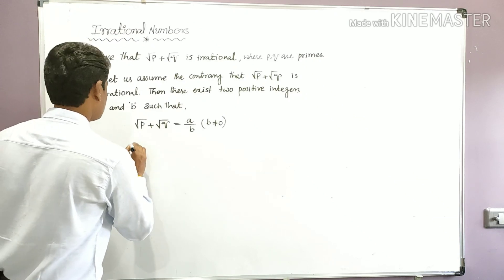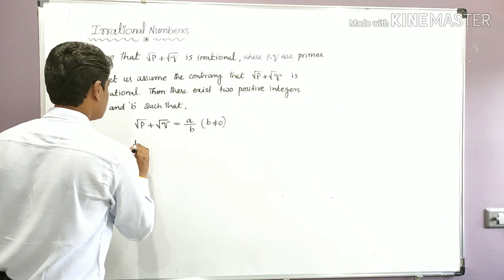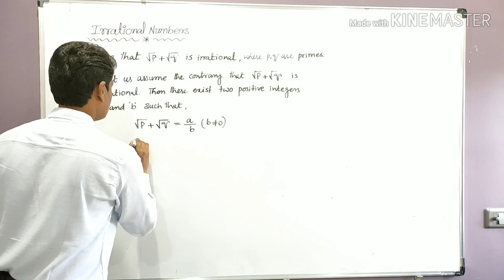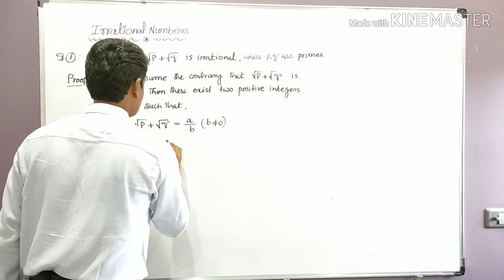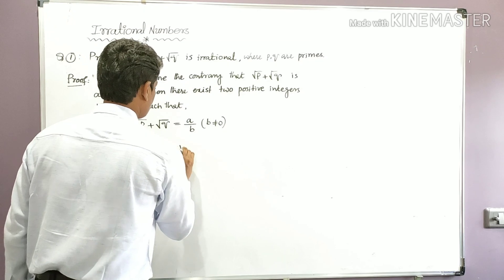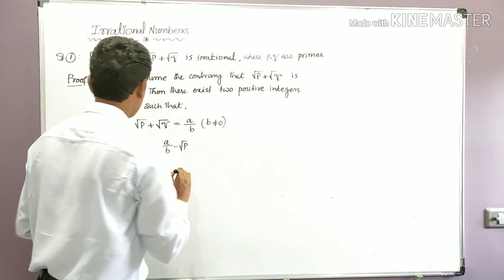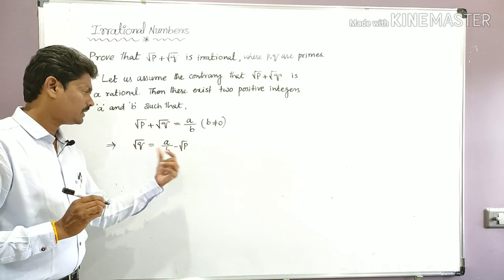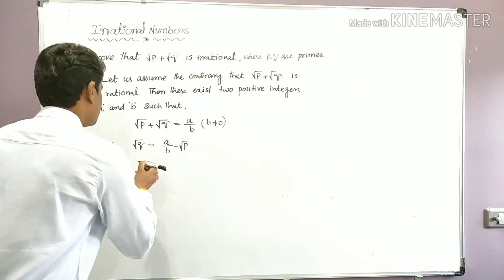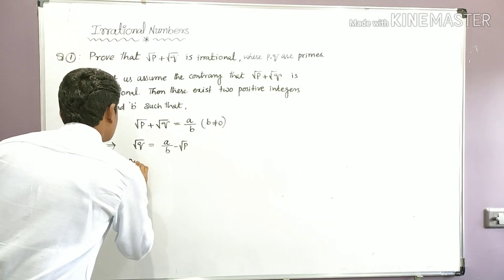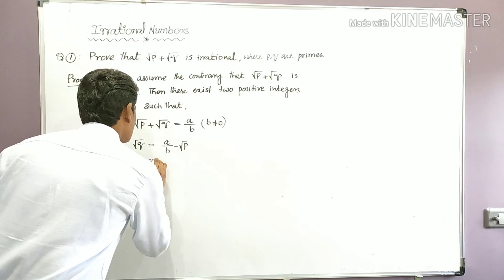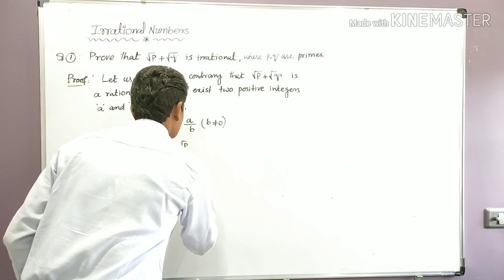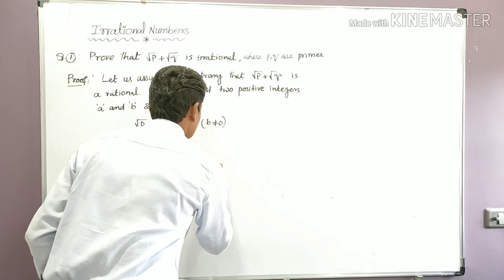Now take √p to the right side. On the left hand side we get √q = a/b − √p. So √q = a/b − √p. By squaring on both sides, we get the next step.